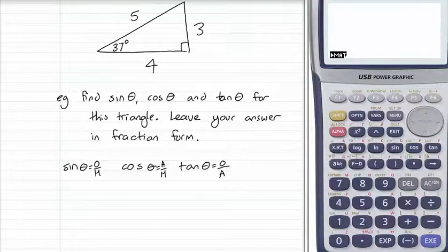We must label our sides. We've got an angle marked in our triangle by having its size given to us, 37 degrees. Opposite it is side 3, the longest side is the hypotenuse.